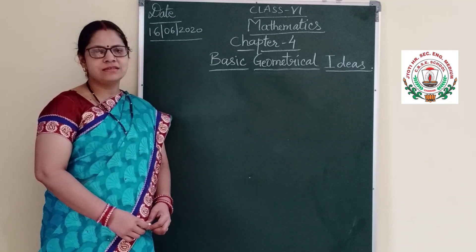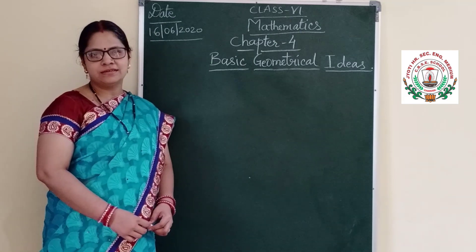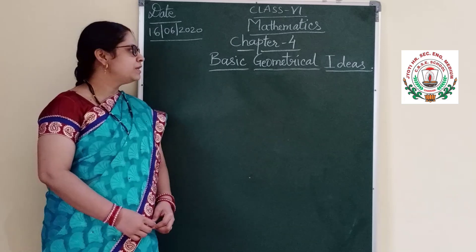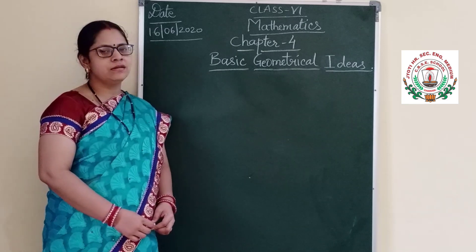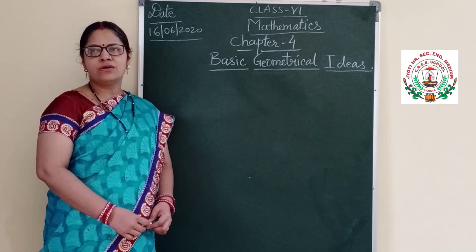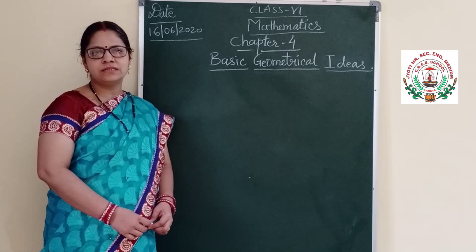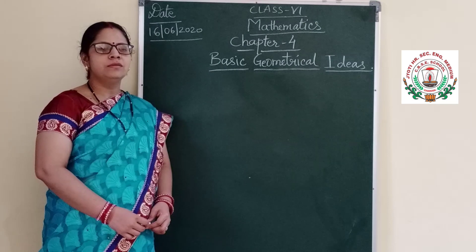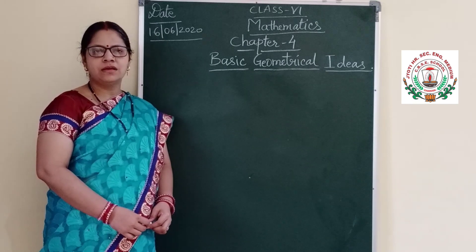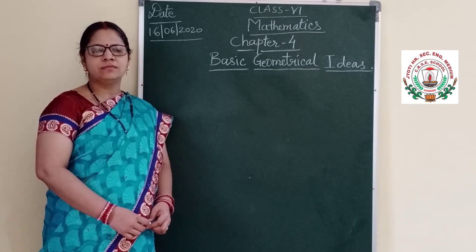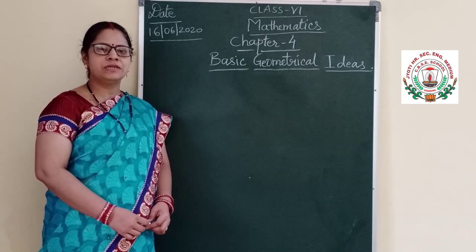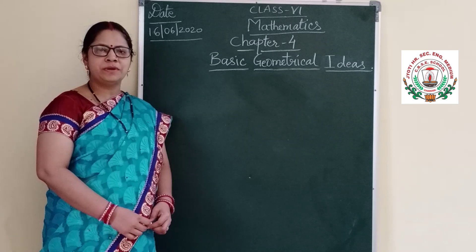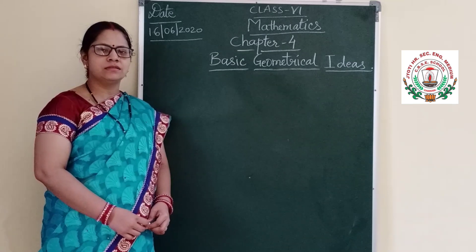Basic and Ideas everyone can understand. Here comes the word Geometrical, consisting of 2 words Geo and Metrical. Geo means Earth and Metrum means the measurement — so Geometry means the measurement of the Earth.